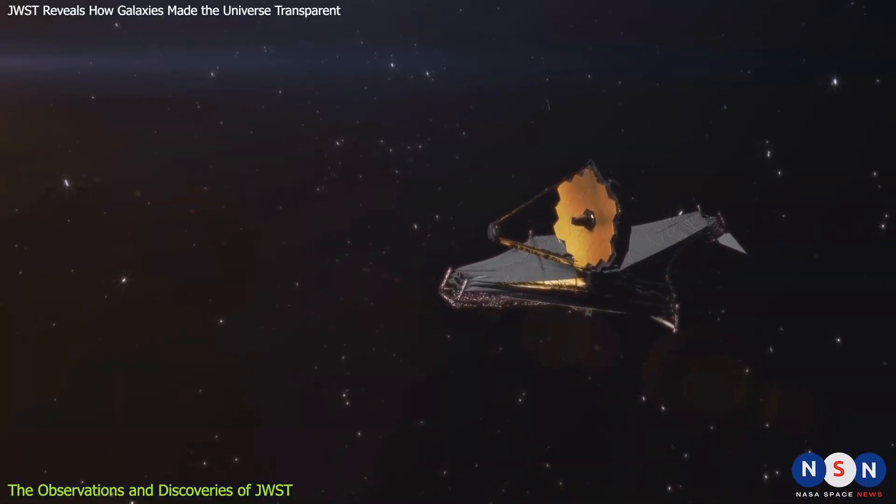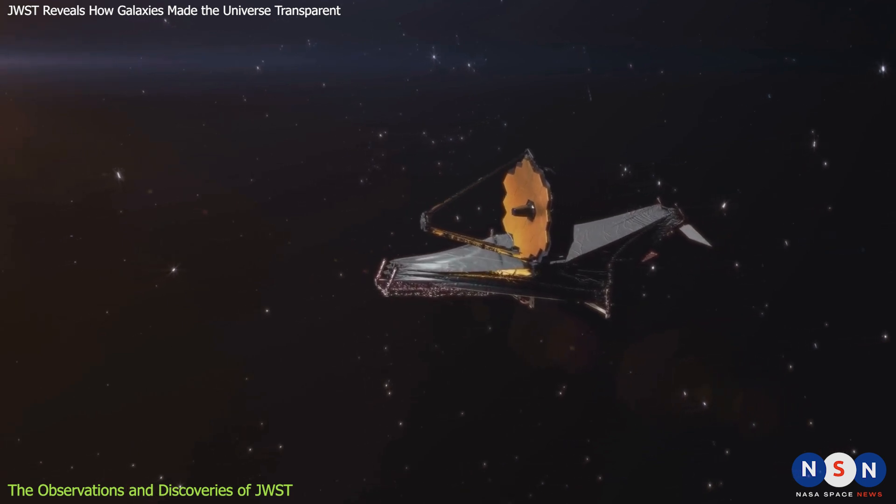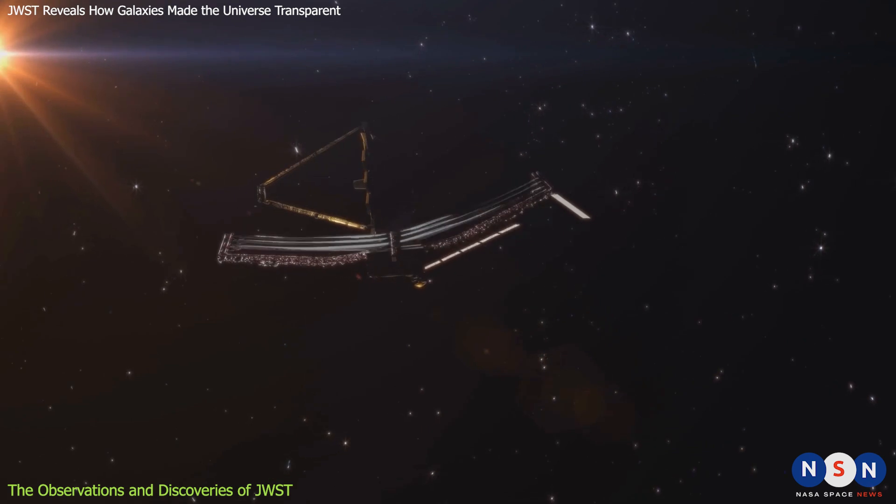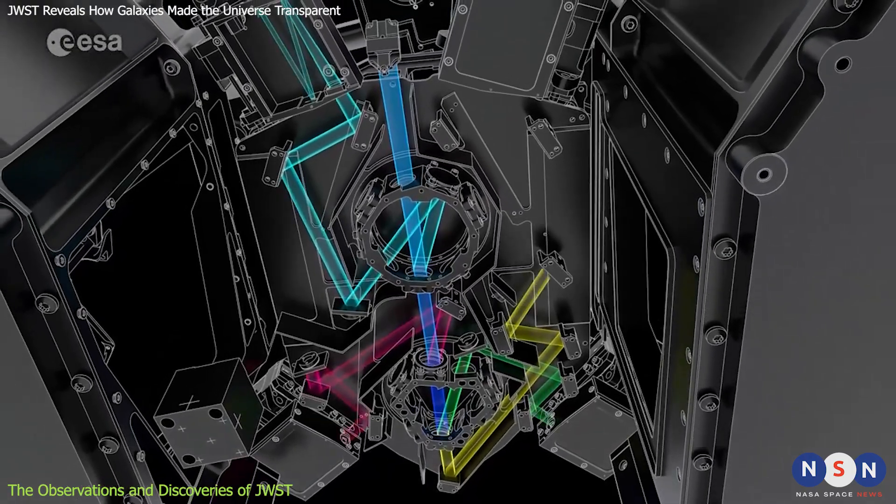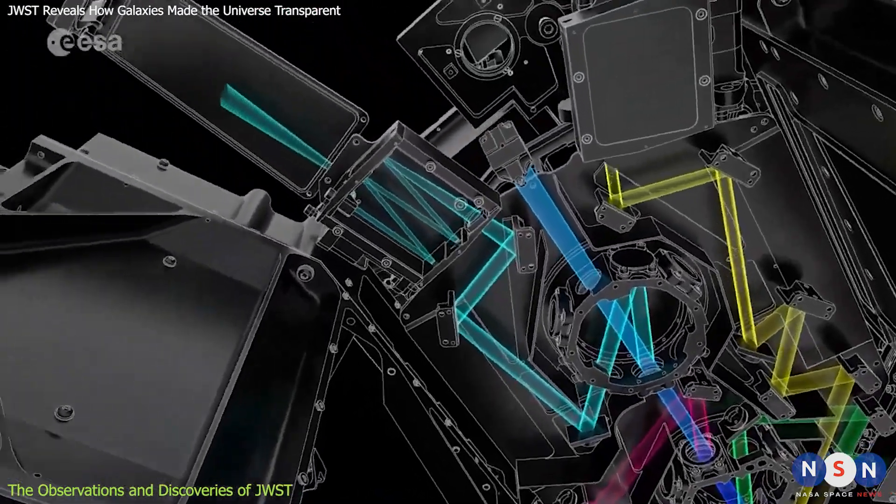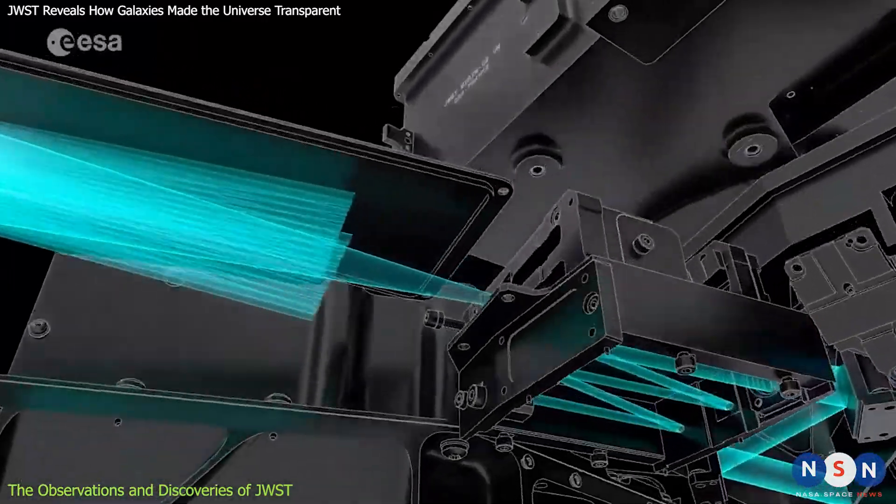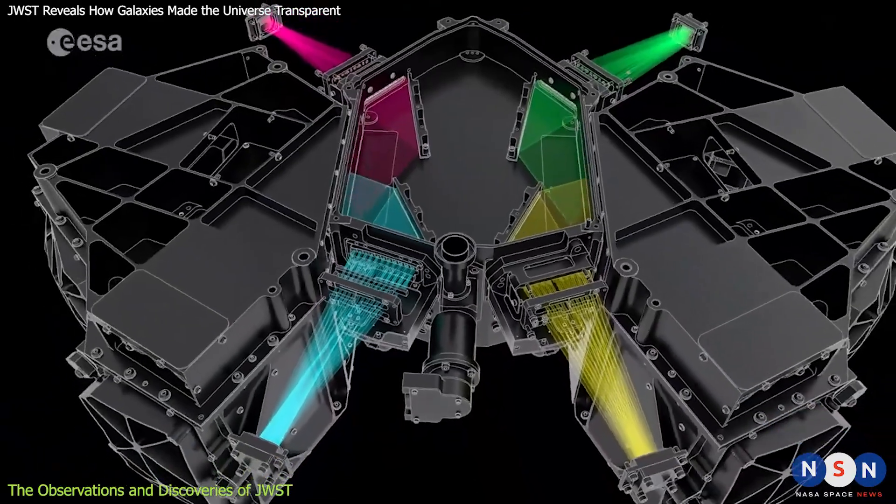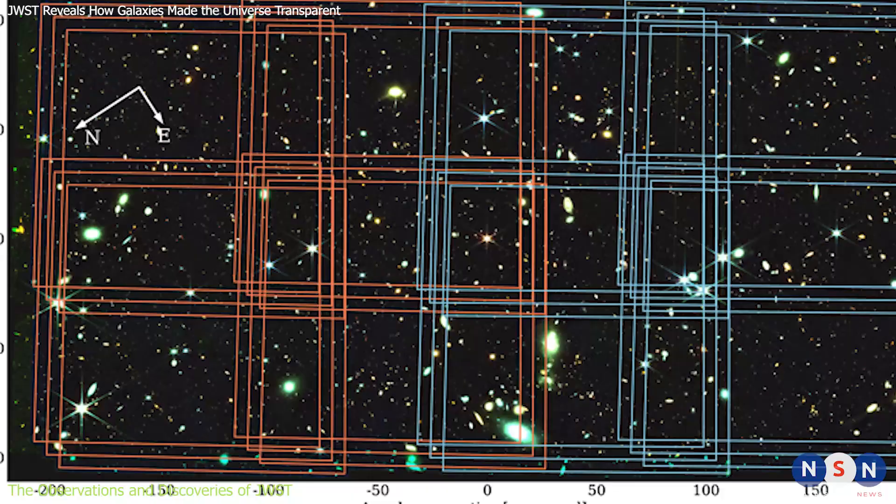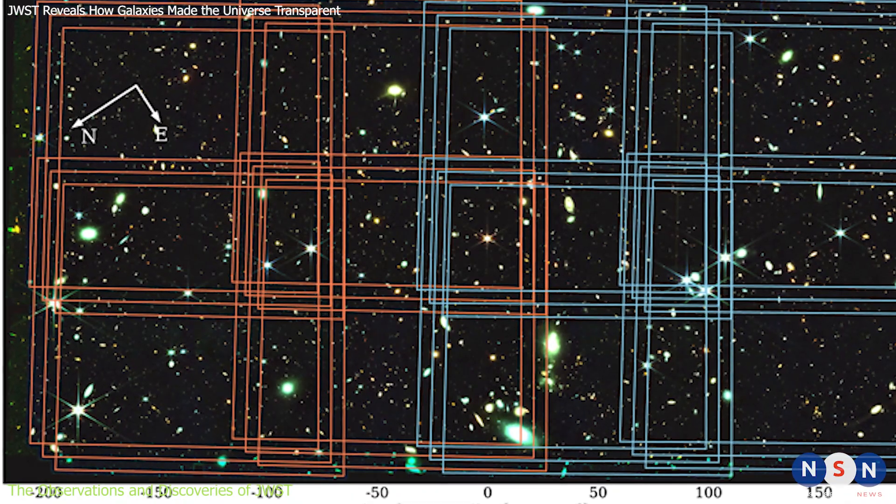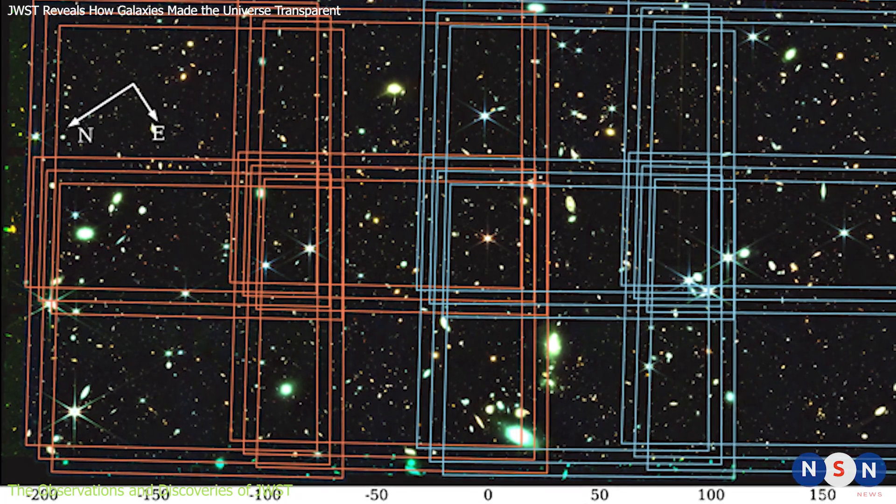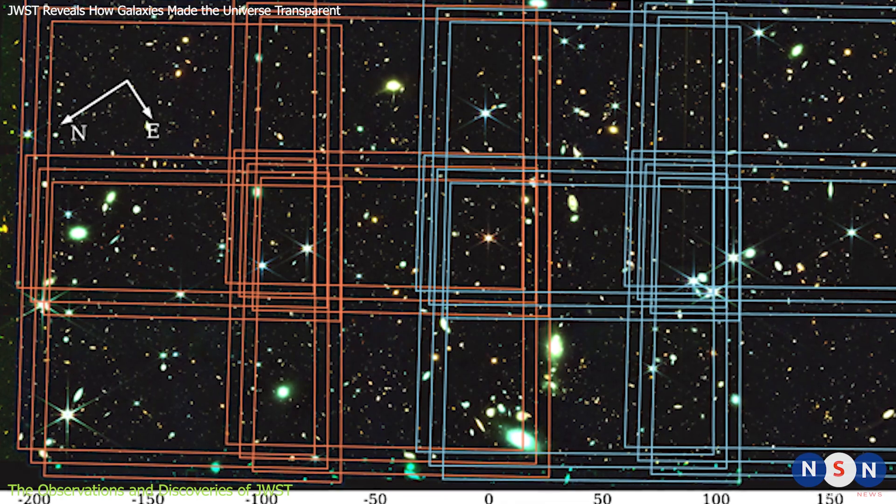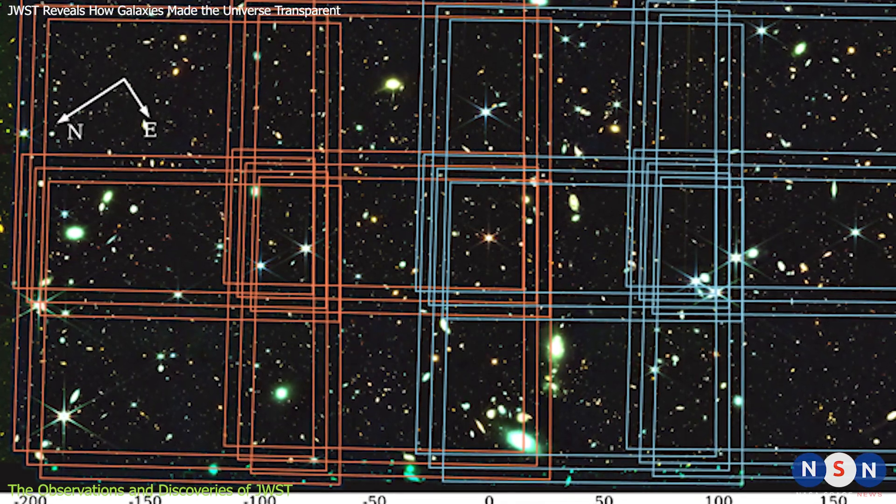This is exactly what a team of researchers did using the James Webb Space Telescope, the most advanced and powerful telescope ever built. Using its four sophisticated instruments that can observe the universe in infrared light, which is invisible to our eyes but can penetrate through dust and gas that block other types of light. The researchers observed a sample of 717 galaxies that existed when the universe was only 900 million years old during the end of the re-ionization era.